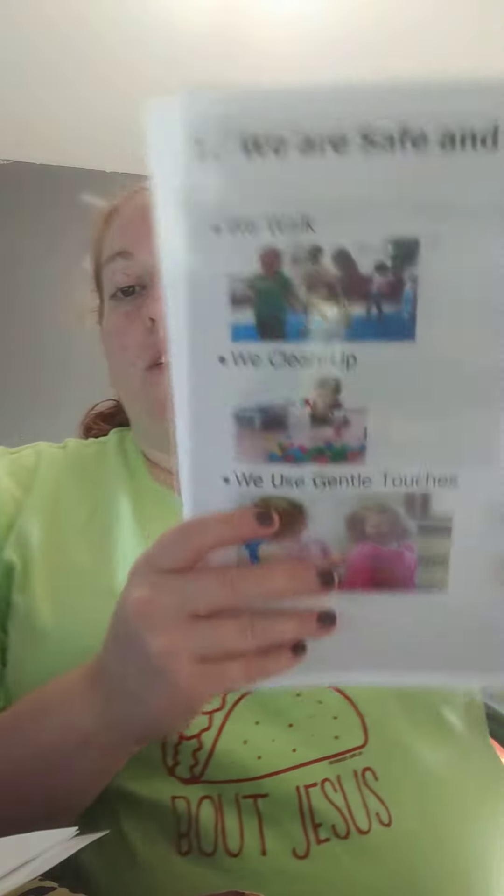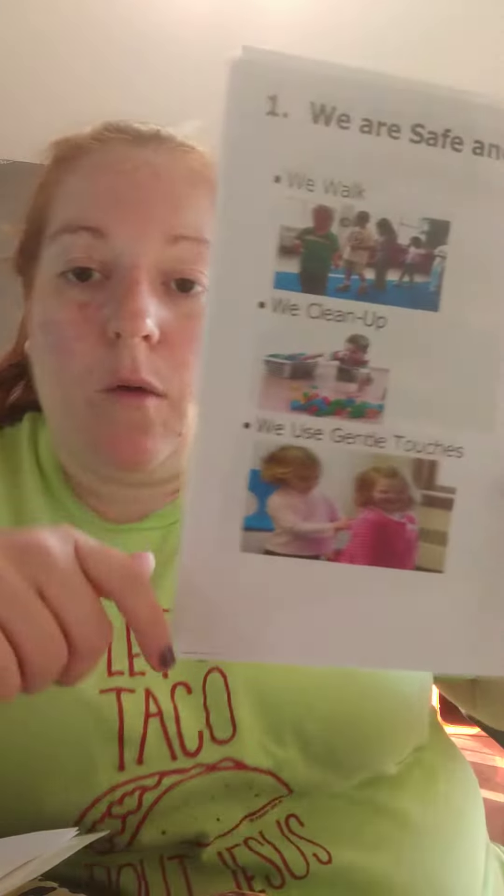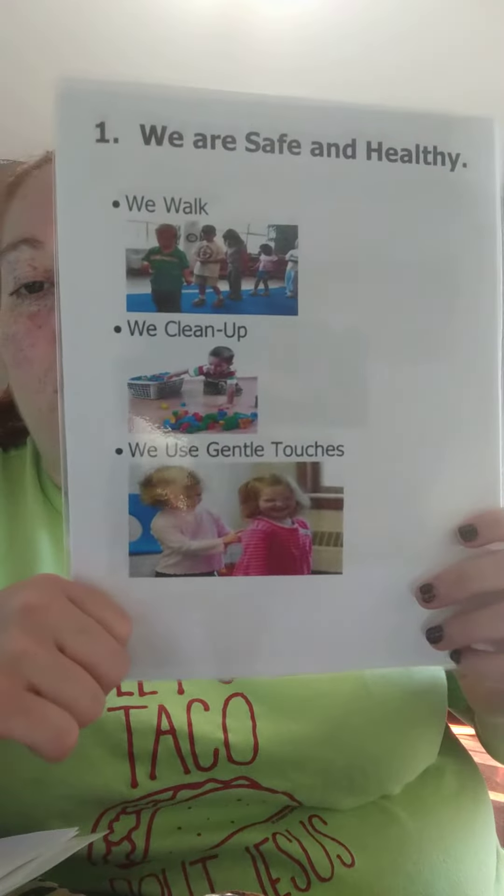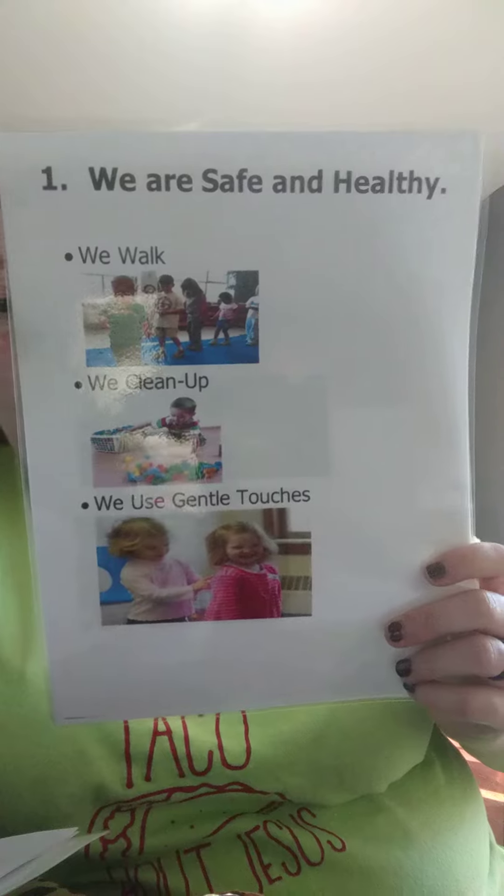Hey friends, today we are going to go over our rules and expectations in the classroom. Some of you that have already been in the classroom know that we do these rules every single day — they're on our board and we have them on velcro, so the kids actually come up and say what the kids are doing in the picture and put it under the correct title. You got black and white handouts of these in your remote learning packet.